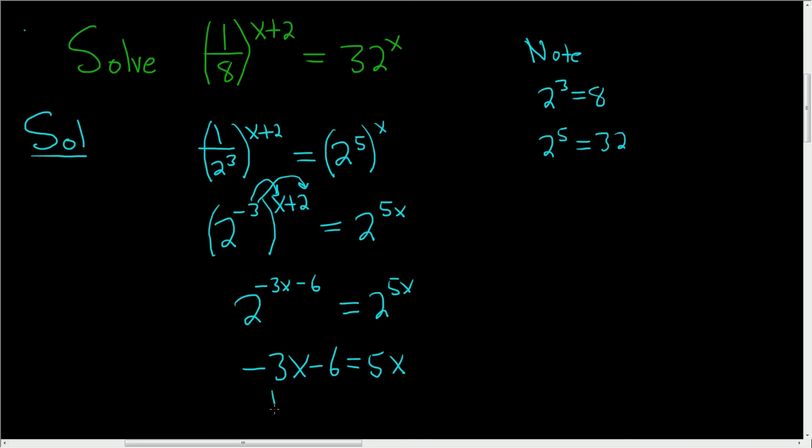To finish solving this, just add 3x to both sides. So we end up with negative 6 equals 8x.